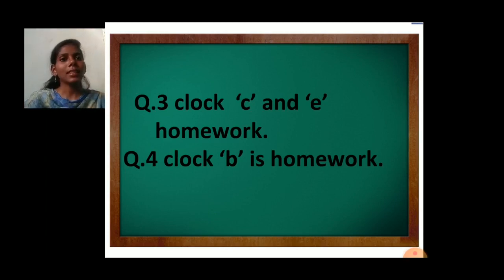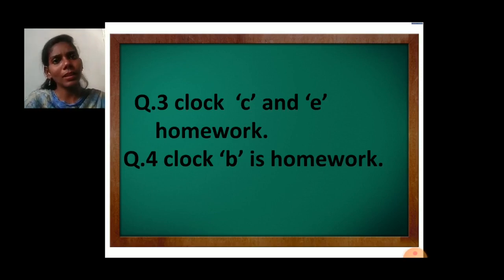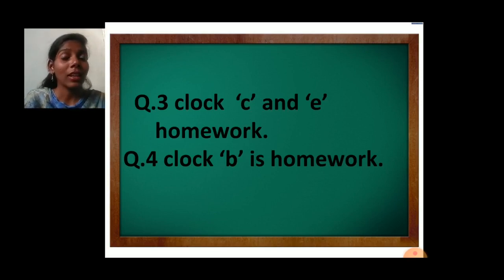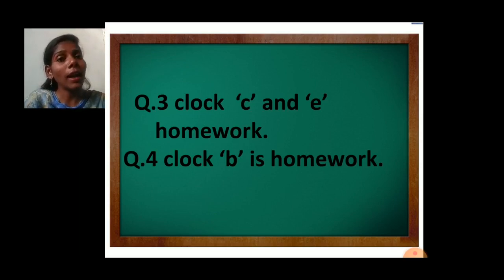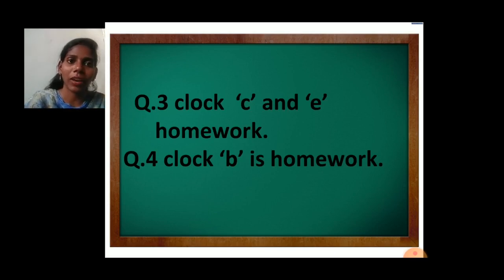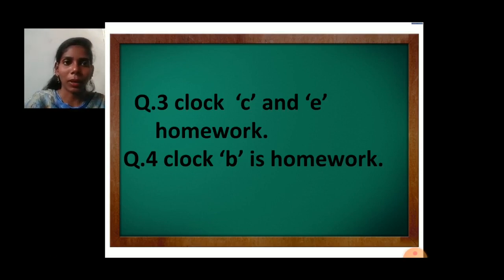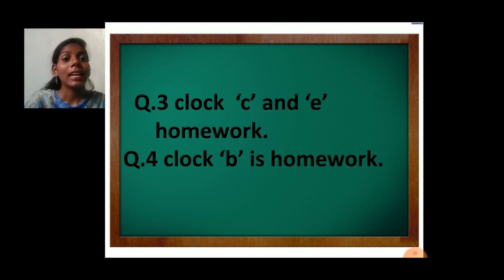Don't be confused. Just understand: quarter past means 15 minutes, half past means 30 minutes. We calculate the minutes by multiplying when the minute hand is at a bigger number — multiply by 5. So if the minute hand is at number 6, multiply 6 by 5 to get 30 minutes, and 30 minutes means half past. The smaller hand is the hour hand, the bigger hand is the minute hand. It is very easy to understand the clock, but you have to do the practice, because practice makes a man perfect.